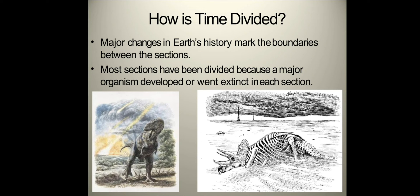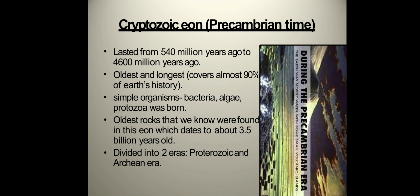How is time divided? Major changes in Earth's history mark the boundaries between the sections. Most sections have been divided because a major organism developed or went extinct in each section. First is the Cryptozoic eon, or Precambrian time. It lasted from 540 million years ago to 4,600 million years ago. It was the oldest and longest, covering almost 90% of Earth's history. Simple organisms like bacteria, algae, and protozoa were born in this eon. All the oldest structs we know were formed in this eon, dating to about 3.5 billion years old. This eon was divided into two eras: the Proterozoic and the Archean era.